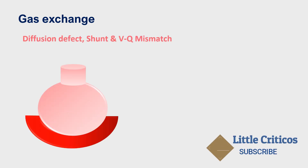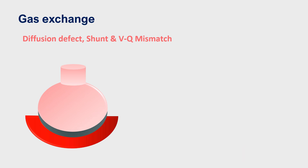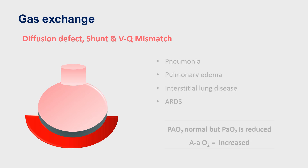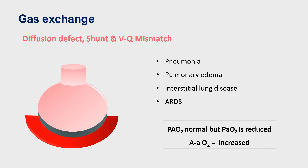In conditions where there is a diffusion defect, shunt, or VQ mismatch, the alveolar-capillary junction gets distorted and oxygenation gets impaired — such as in pneumonia, pulmonary edema, interstitial lung disease, and ARDS. Though the alveolar partial pressure of oxygen remains normal, the arterial partial pressure of oxygen is reduced, so the alveolar-arterial gradient is increased.